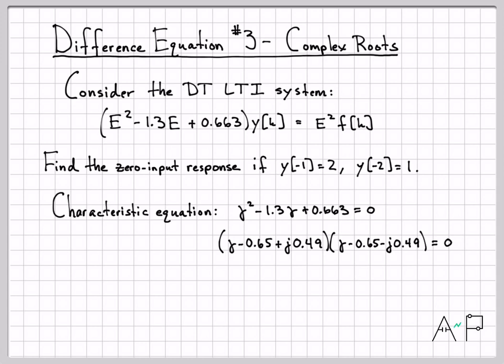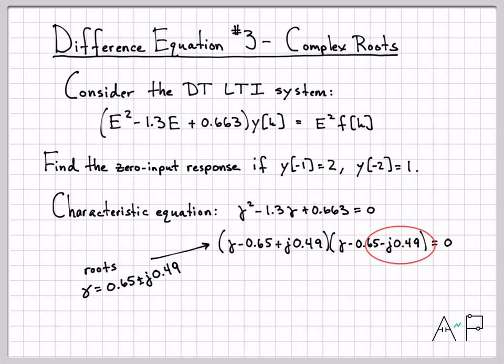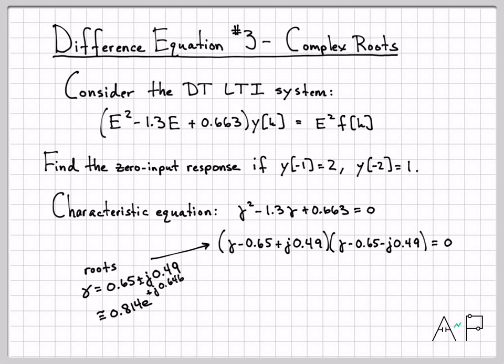Using a calculator or the quadratic formula, we find that we have a complex conjugate pair of roots. One root is gamma = 0.65 minus j·0.49, and the other is gamma = 0.65 plus j·0.49 — so 0.65 ± j·0.49. It's useful to write these in polar notation: the magnitude of the roots is 0.814 and the angle is 0.646 radians. We'll need this polar form as we move forward.